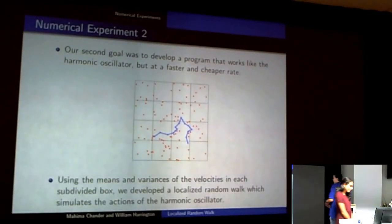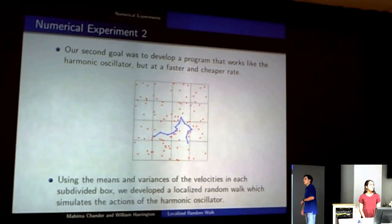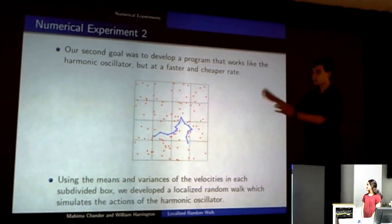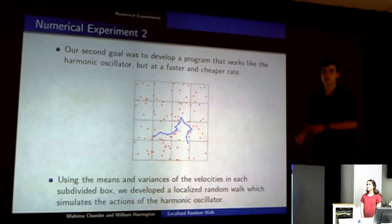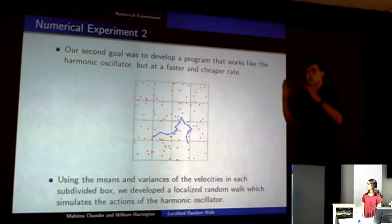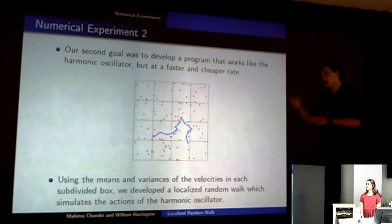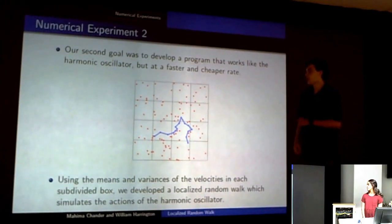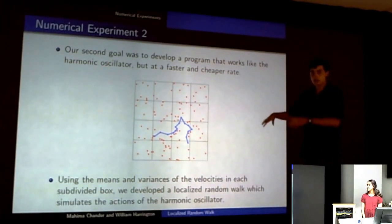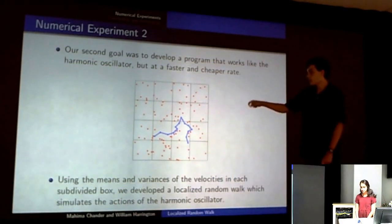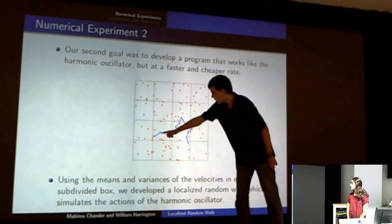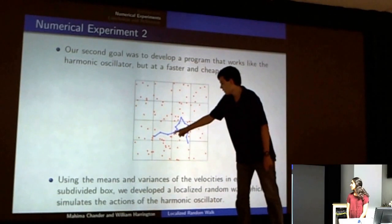In the second numerical experiment, our goal was to develop a program that mimics the actions of the harmonic oscillator, which we were working with previously, but at a much faster, cheaper rate. Essentially it starts the particles in the exact positions that the harmonic oscillator would. We ran a trial of the harmonic oscillator to calculate at each time step the mean and variances in each box of the grid. At each time step, it would move the particles in our faster simulation using the mean value of the original particles in that box.